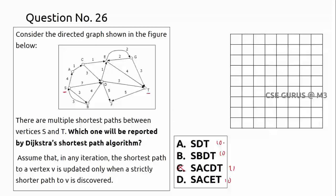We have a competition among options A, B, and D, all with path length 10. We cannot simply say the path with fewer vertices is the shortest. The key condition is: update only when a strictly shorter path is discovered. I'll build a table to trace Dijkstra's algorithm, using S as the source.